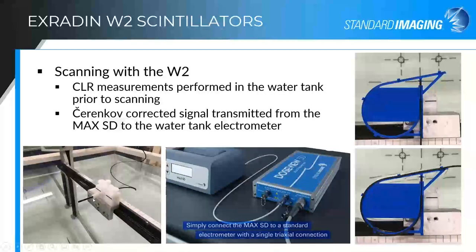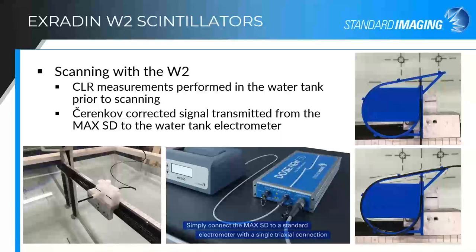The water tank setup uses an adapter sleeve to increase the stem size of the scintillator so it fits in a standard chamber holder. The fiber connects to the MaxSD input, and a triaxial output from the MaxSD goes to your water tank scanning electrometer. From the water tank's standpoint, it looks like a diode — a detector with no applied bias that produces a signal when the beam is on. You do need to scan slowly; it's a low signal-to-noise device, and we recommend about one second per measurement for much better data.